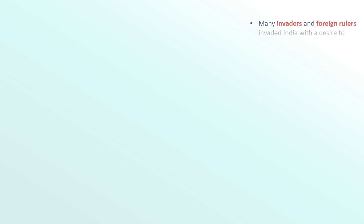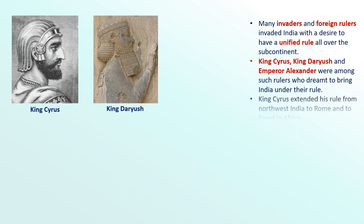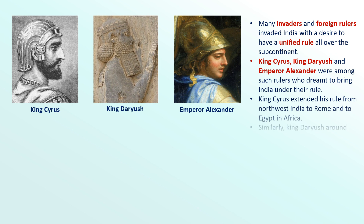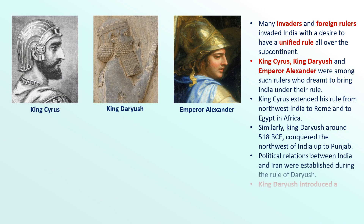King Cyrus, King Dariush and Emperor Alexander were among such rulers who dreamt to bring India under their rule. King Cyrus extended his rule from northwest India to Rome and to Egypt in Africa.